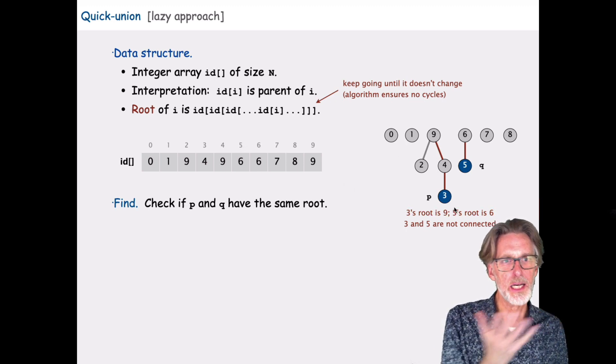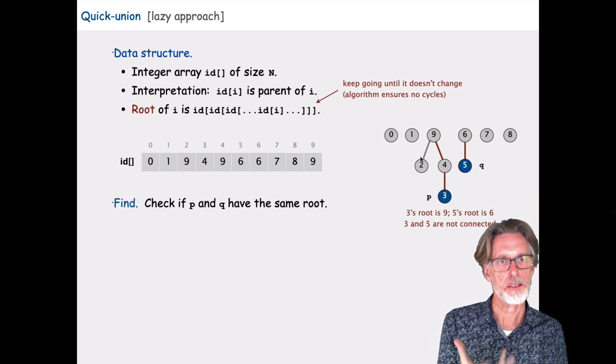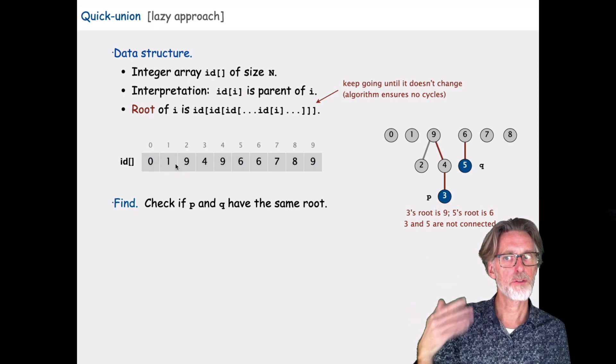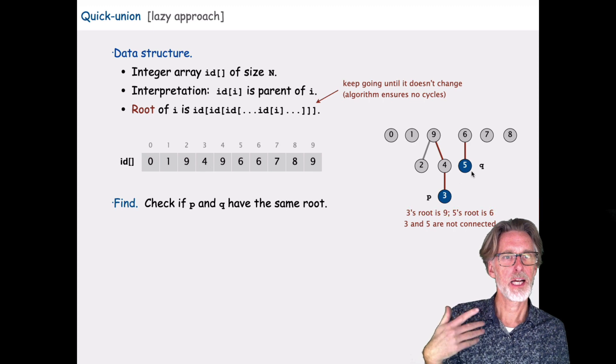The idea of quick union is to be lazy about the computation of the ID. We don't want to compute all of the IDs on the nose as quickly as possible. We want to delay that. So we're going to end up with a structure kind of like this.